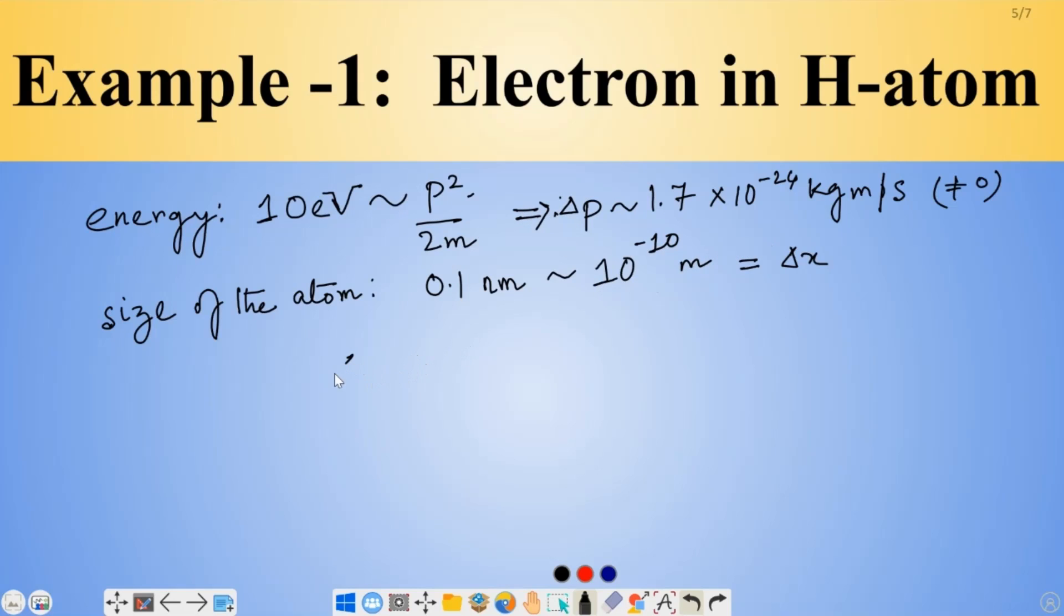Now, if we calculate these two things together, delta p and delta x, you get something and I should say this is approximate because this is very approximate, 1.7 times 10 to the power negative 34. And if you plug the units, it's going to be kilogram meter square per second. This is about equal to h-bar, right? So, this tells us that quantum mechanics is definitely important here. We have to do some quantum in order to understand the system.